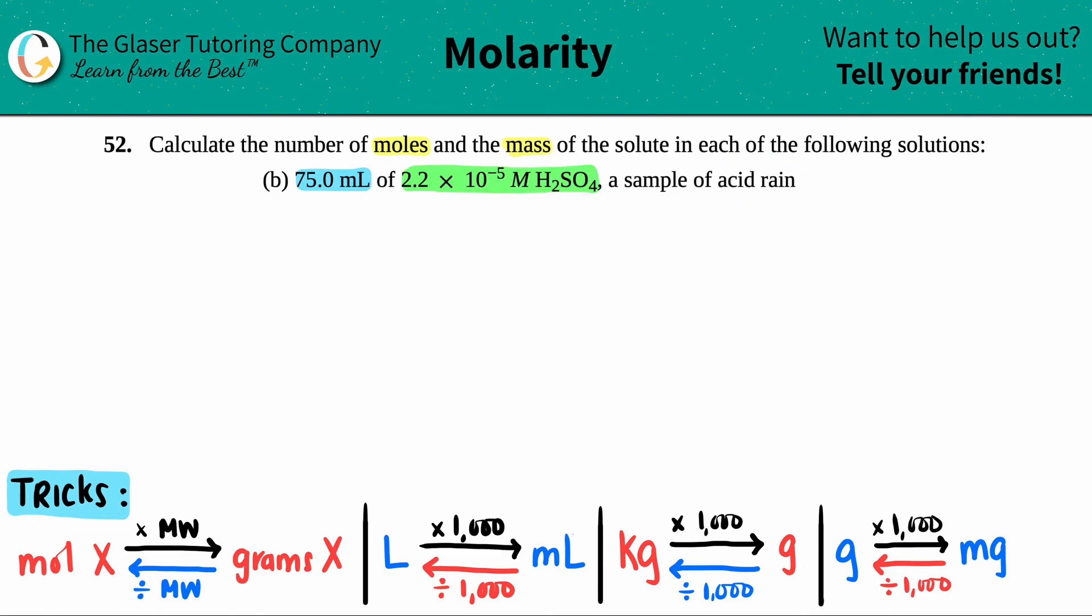They gave us a volume—milliliters is a type of volume—and they gave us a molarity. Remember, capital M is molarity. There are two ways we could do this. There's a formula, molarity equals... but in this case we don't want to find molarity, we want to find moles. They gave us the molarity.